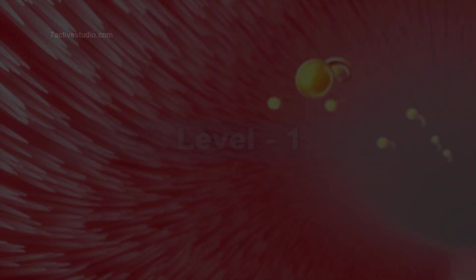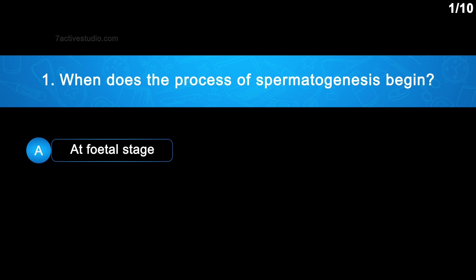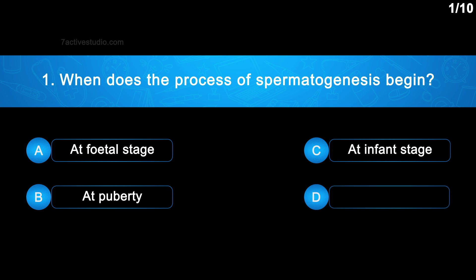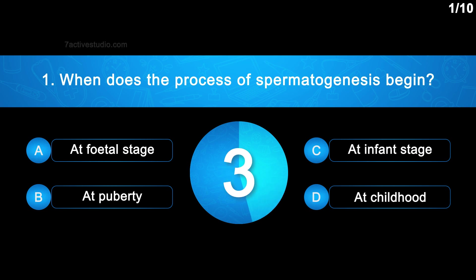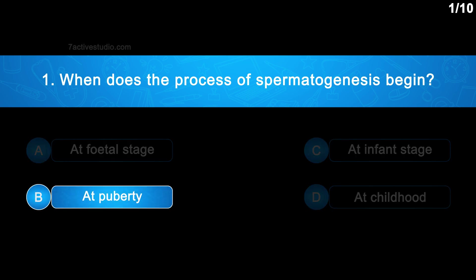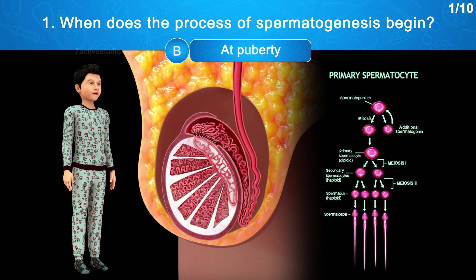Level 1, Question No. 1: When does the process of spermatogenesis begin? Option A: At fetal stage. Option B: At puberty. Option C: At infant stage. Option D: At childhood. The correct answer is Option B — at puberty. In the testis, spermatogonia produce sperms by spermatogenesis that begins at puberty.